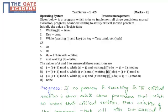Critical section. Then: if j equals i, then lock equals false, else waiting[i] equals false.